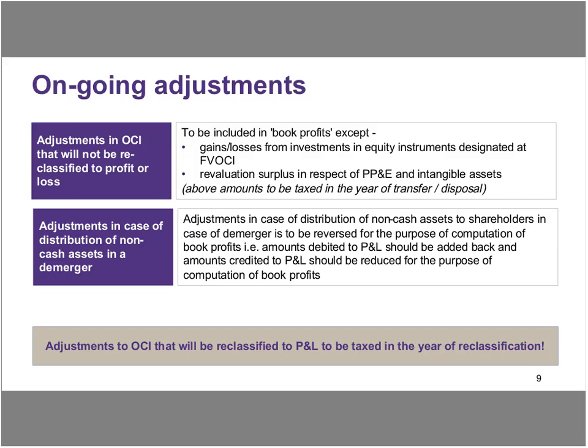The second situation is essentially of certain adjustments made to P&L on account of distribution of non-cash assets in a situation of a de-merger. Whenever there is a distribution happening in the case of a de-merger, the difference between the carrying amount of the asset distributed and the dividend liability is adjusted in profit or loss. Under MAT, what they're proposing is that such adjustments need to be reversed for the purpose of computation of book profits. Any amounts debited to P&L on account of such an adjustment need to be added back to book profit, and any amount credited to P&L would be reduced for the purpose of computation of book profits.